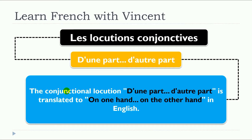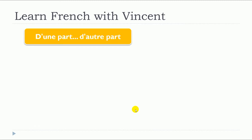The conjunctional locution d'une part, d'autre part is translated to on one hand, on the other hand in English. So, we will see some examples with d'une part, d'autre part.